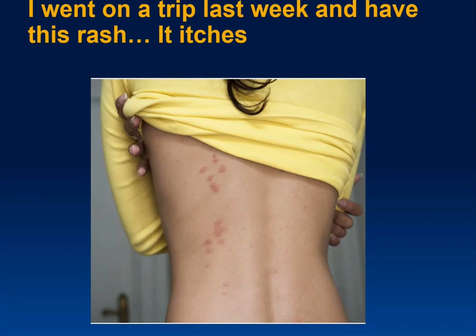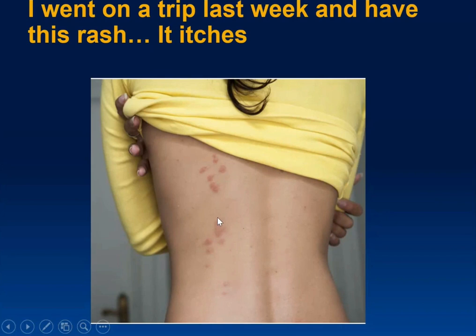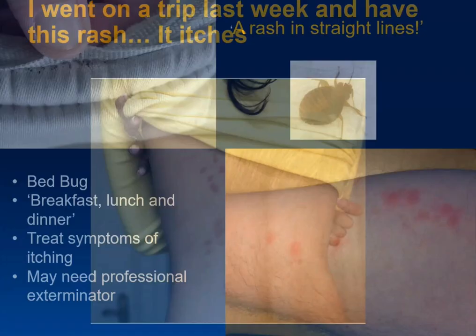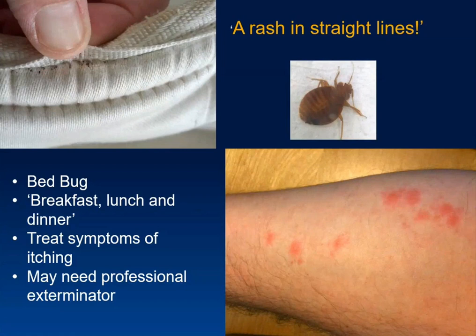A patient went on a trip last week and now has an itchy rash. They stayed at a budget motel. Looking at the lesions, you see a pattern that is somewhat linear — following a path. When lesions are linear, think arthropod. This looks like bedbugs. They generally feed at night and really don't transmit diseases — they're a nuisance, though there is one case report of possible MRSA transmission. Getting rid of them can be difficult; when traveling, check the mattress seams and pull-out shelves for bugs.